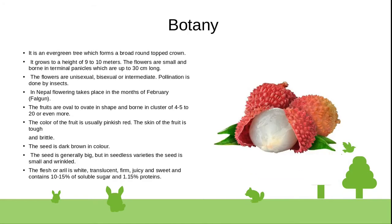Botany and morphological structure: lychee is an evergreen tree which forms a broad, round-topped crown. It grows to a height of 9 to 10 meters. Flowers are small and borne in terminal panicles which are up to 30 cm long.